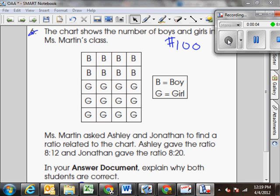The chart shows the number of boys and girls in Miss Martin's class. Miss Martin asked Ashley and Jonathan to find a ratio related to the chart. Ashley gave the ratio of 8 to 12 and Jonathan gave the ratio of 8 to 20.